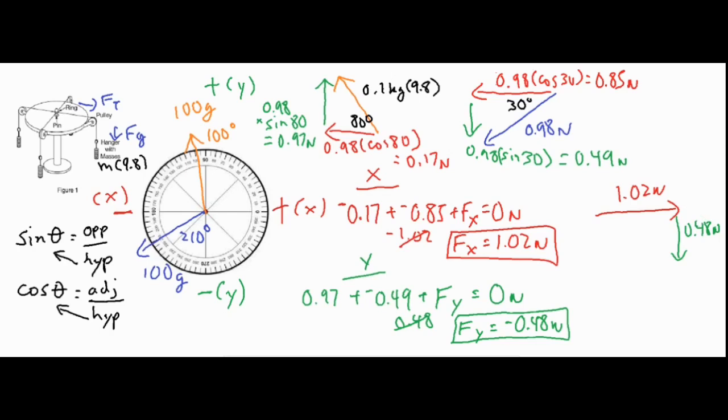And then we want to add the y component, so negative 0.48, which means it's going downwards. Our final answer is going to be the resultant vector, which is the combination of those two. We're going to use the Pythagorean theorem, which is a squared plus b squared equals c squared. We're going to take the square root of 1.02 squared plus 0.48 squared, and that's going to give us 1.13 newtons for our final resultant force.